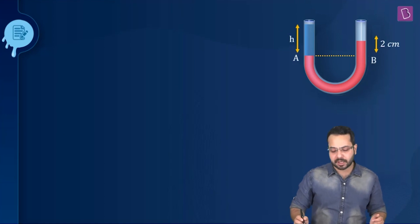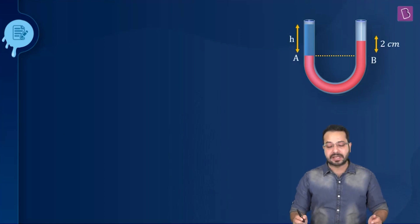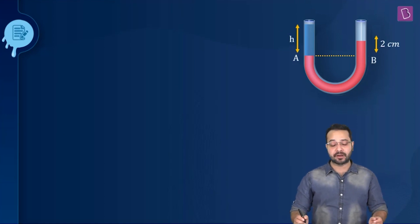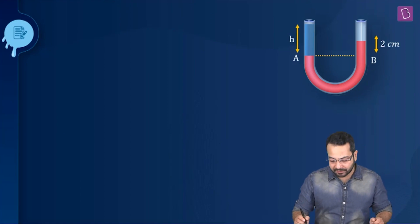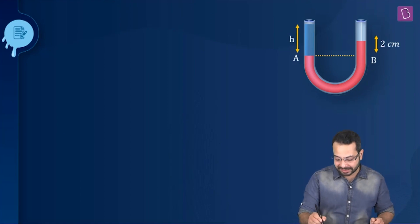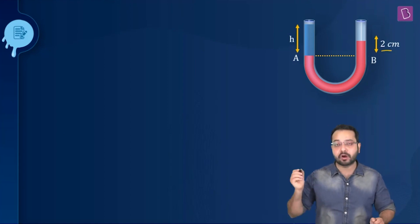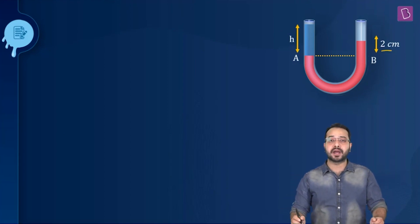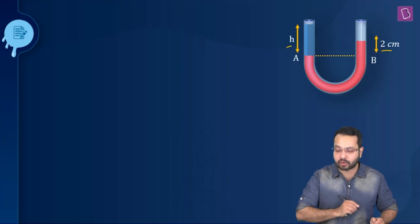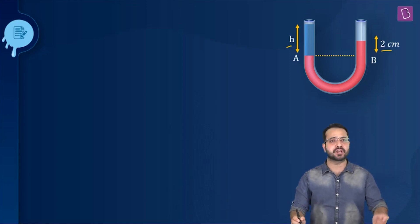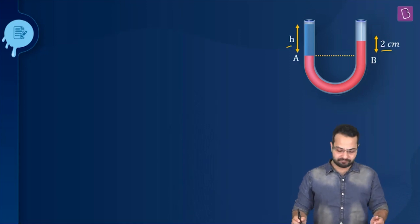In one of the arms we have mercury, in the other arm we have water, and if we look at the level AB, then there is a mercury column of height 2 cm and there is a water column of height h. We have to find this height h.